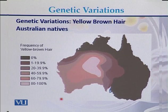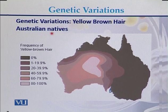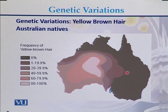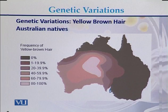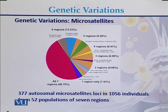Another example of genetic variation is yellow or brown hair, usually found in Australian natives. One part of Australia has brown or black hair while another part has light or yellow hair color. This is due to the alleles responsible for hair color.